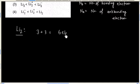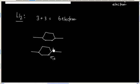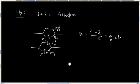Let us find bond order for Li₂. It will have 3 plus 3, so 6 electrons. We can write the molecular orbital diagram: sigma 1s, sigma star 1s, sigma 2s, sigma star 2s. We have 4 bonding electrons and 2 anti-bonding electrons. So bond order is (4 minus 2) divided by 2, which equals 1.